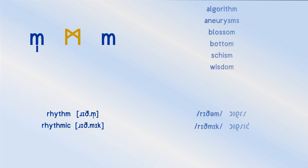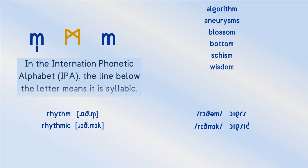Let's start with the easiest one. The rune Man says M as a syllabic consonant that may be found in algorithm, aneurysms, blossom, bottom, schism, and wisdom. Depending on your accent, it may not appear in all of those words, but you should still be able to see how it could appear. What other examples can you think of? Write them below.